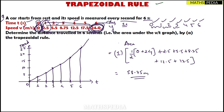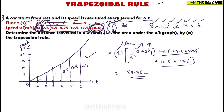It is not necessary to draw the graph before substituting the formula when a table is directly given. Time is the x-axis and speed is the y-axis, so we only use the y (speed) values as ordinates and the width is 1 second. However, if the question carries more marks, you should draw the graph and label all values: 0, 2.5, 5.5, 8.75, 12.5, 17.5, and 24.